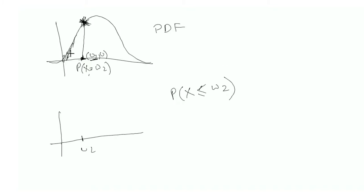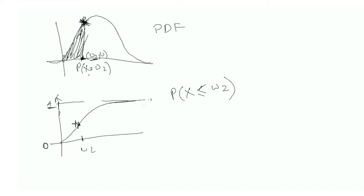To compute the CDF at w2, you calculate the area under the PDF curve for all values less than w2. The resulting CDF curve ranges from zero to one. At each point it gives P(x ≤ w2). For w1, you get P(x < w1) as the shaded area and plot it; repeating this for all points gives you the full CDF.